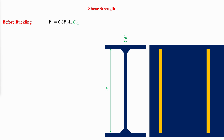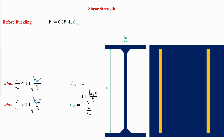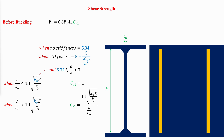If the depth-to-thickness ratio of the web does not exceed the specified limit, the web will fail due to shear yielding and the constant C sub V1 is equal to 1. However, if it exceeds the limit, the web will fail under shear buckling and the constant is reduced accordingly. The coefficient K sub V depends on whether transverse stiffeners are used. If there are no transverse stiffeners, it is equal to 5.34. If there are stiffeners and the ratio of stiffener spacing to web height does not exceed 3, then the coefficient equals 5 plus 5 divided by (a/h) squared.